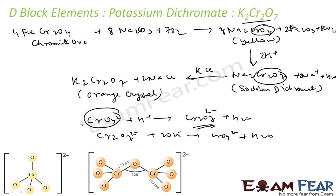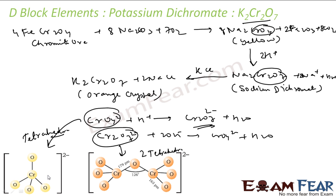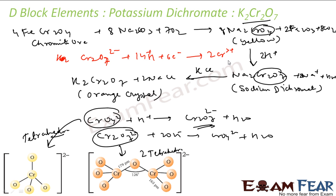The structure of CrO₄²⁻ is tetrahedral. The structure of Cr₂O₇²⁻ consists of two tetrahedra; the Cr–O–Cr bond angle is 126°, the bridging bond length is 179 pm, and the terminal Cr–O bond length is 163 pm. Potassium dichromate is a very strong oxidizing agent used in industry. Cr goes from +7 to +3 oxidation state — it gets reduced and is thus a good oxidizing agent.